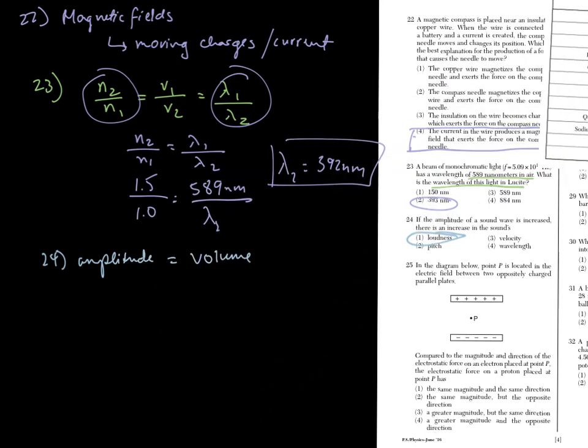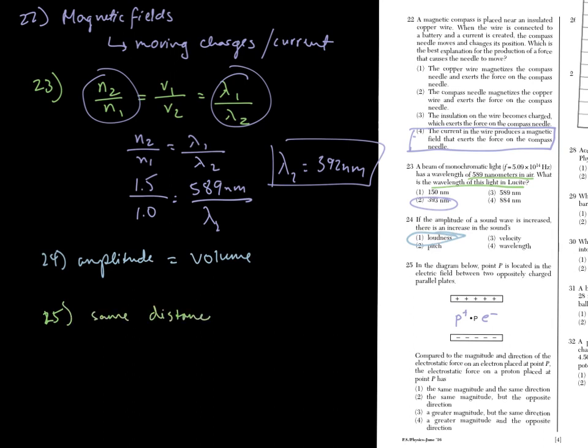Number 25. The diagram below point P is located in an electric field between two obsolete charged power plates. Compared to the magnitude and direction of the electrostatic force of an electron placed at point P, so pretend we have an electron here. And then we also have a proton placed at point P. Since they're both the same distance away, it's going to be the same magnitude. So they're both equidistant from the plates and they also have the same charge. Now the direction is going to be opposite. The proton is going to go downward, the electron is going to go upward. So same magnitude but opposite direction choice 2.